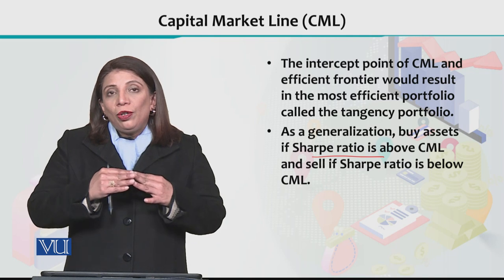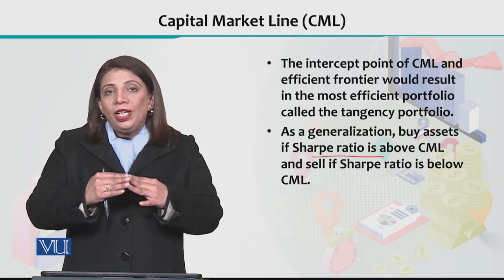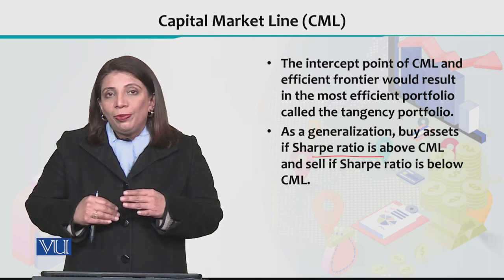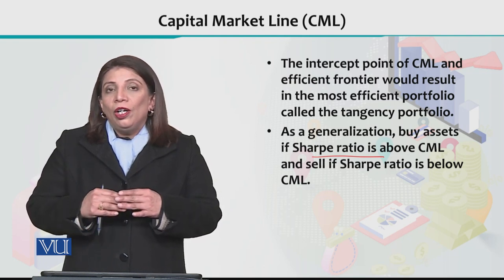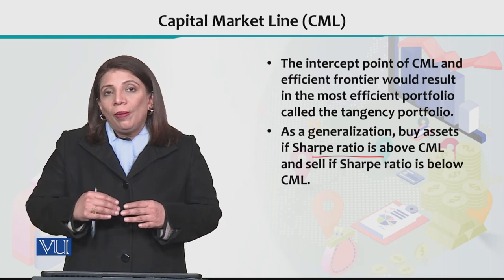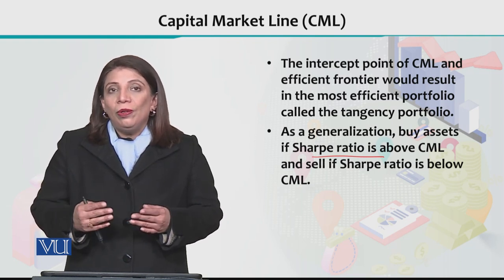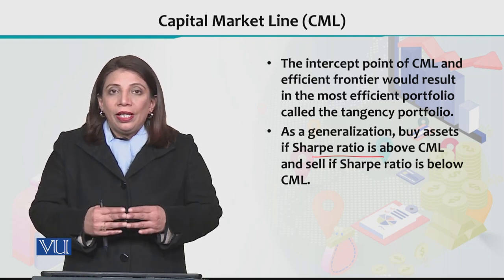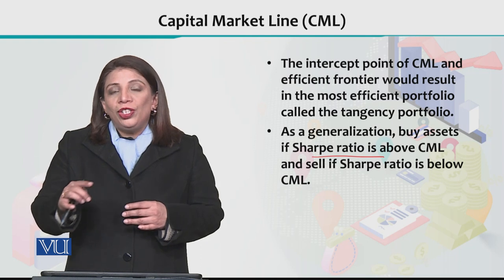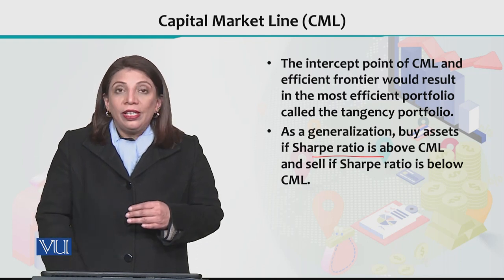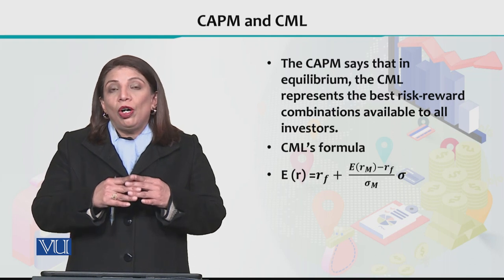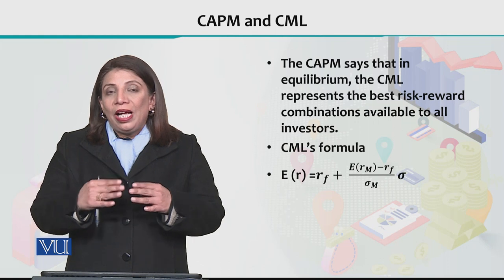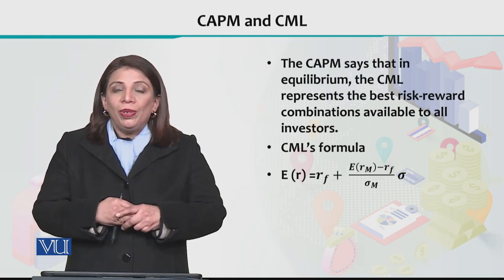If we are talking about any point that falls below CML — combinations of risk-free assets that fall below CML — all those combinations are not optimal. They will not give you the best combination of risk and reward. Only the points that lie on the CML give you the optimal allocation of the different available assets you want to invest in.